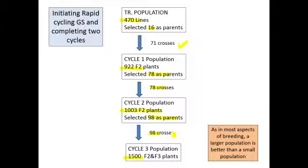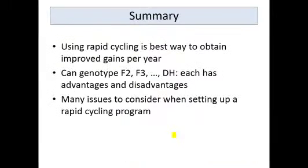As in most aspects of plant breeding, a larger population is always better than a smaller population. But just like in your field trials, there are constraints of space and funding. In summary, using rapid cycling is the best way to obtain improved gains per year or per season. You can genotype F2s, F3s, double haploids, or even F1s — each has advantages and disadvantages — and there are many issues and logistics to consider when setting up a rapid cycling program.